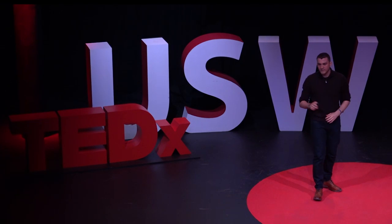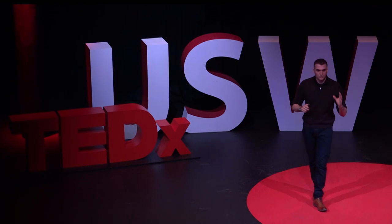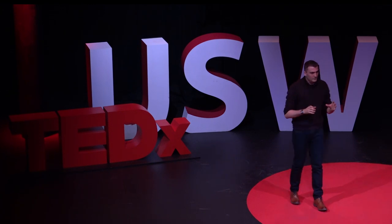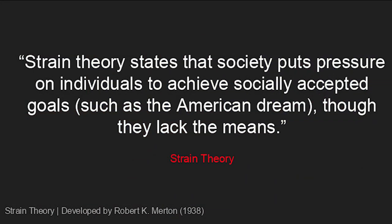The first theory we're going to look at is called strain theory. Strain theory is the idea that society puts pressure on individuals to achieve specific goals, like the American dream. But when individuals lack the means to achieve those goals, they're more likely to commit crime so that they can achieve them.